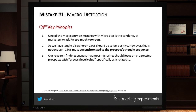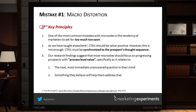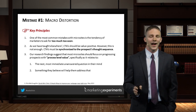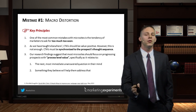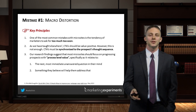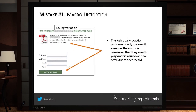This wasn't just from one test — it's from a meta-analysis of all the microsite testing we've done. What we discovered is that performance increases specifically when you focus on process-level value: first, the next most immediate unanswered question in the prospect's mind, and second, something they believe will help them address it. For example, instead of saying 'upgrade now,' say 'see the upgrade price.'